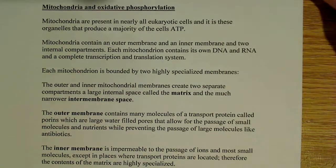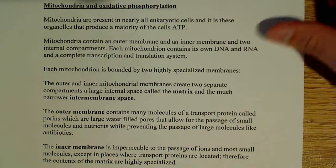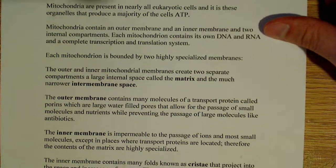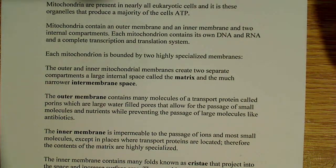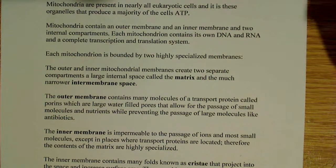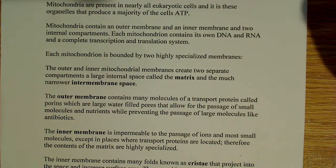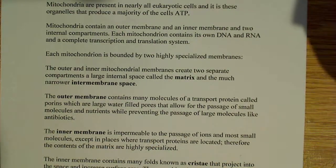Each mitochondrion is bound by two highly specialized membranes. The outer and the inner mitochondrial membranes create two separate compartments: a large internal space known as the mitochondrial matrix, and the much narrower intermembrane space, which is where the protons are going to be pumped during the process of electron transport.